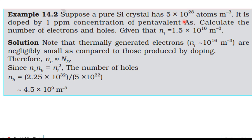Arsenic, a pentavalent substance, is doped into the silicon. The concentration is 1 parts per million — that means for every 10 power 6 silicon atoms, there is 1 arsenic atom doped.